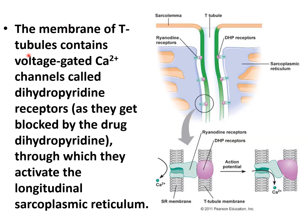The membrane of the T-tubules contains a voltage-gated calcium channel known as the dihydropyridine receptor. These dihydropyridine receptors get blocked by the drug dihydropyridine, through which they activate the longitudinal sarcoplasmic reticulum. In this figure you can see the dihydropyridine receptor and the ryanodine receptor.